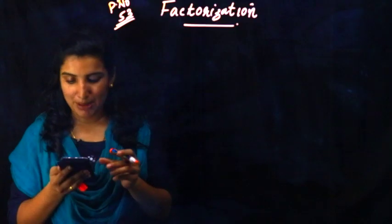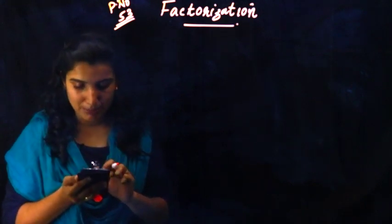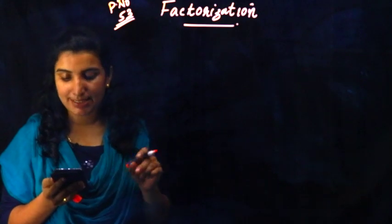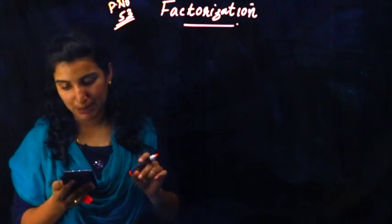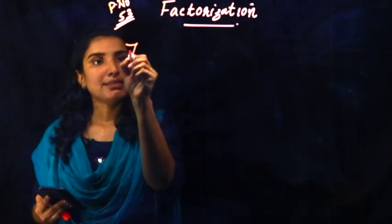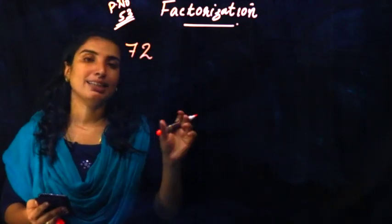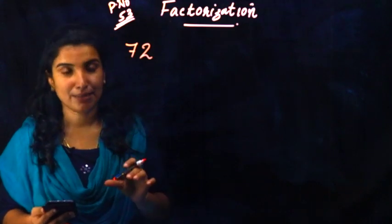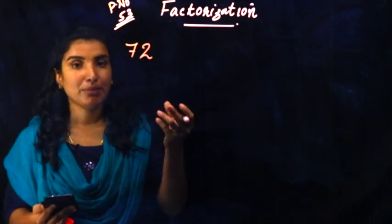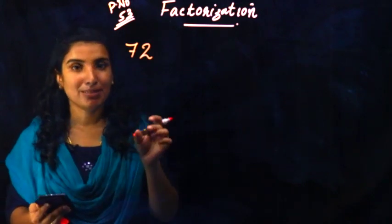Let's go to textbook page number 53, last factorization. We can factorize any number as a product of prime numbers. For example, we can write 72. Now we have the number 72 — what number is a product?